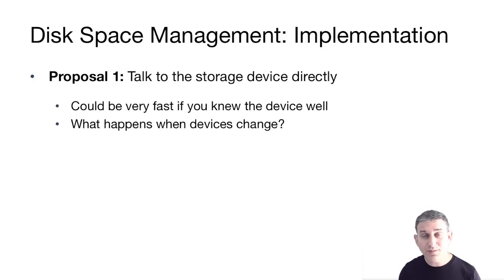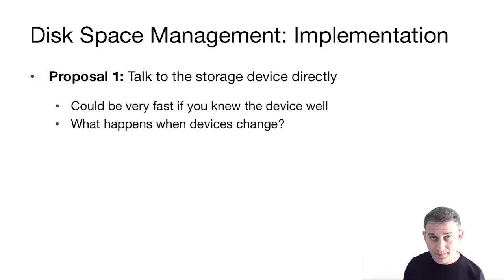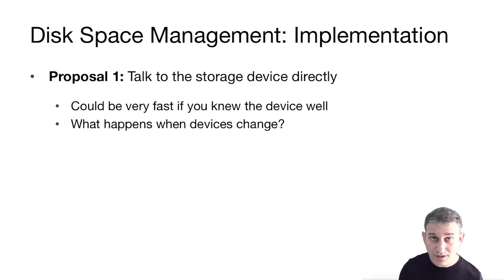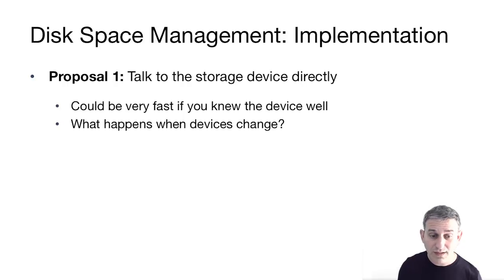How is disk space management implemented? There are several options. One proposal is to implement it at a very low level — database software directly talking to the storage device, bypassing the operating system. This means going direct to hardware as fast as possible. The problem is that when you swap out one device for another, the software has to be ported. Way back when, database systems were optimized for particular disk drives, but these days, because disk drives come and go, that approach is very unusual and typically not done anymore.